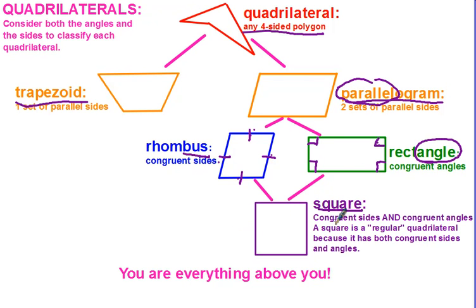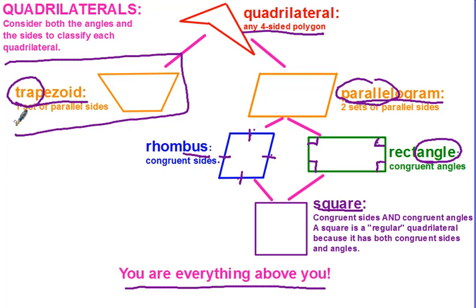And then square, of course, you've known since you were little. Another little trick is you are everything above you. Also for the trapezoid, if you decide that you have a trapezoid, you are trapped. You're over here all by yourself. You won't ever be any of these other things because rhombus, rectangle, and square have to be parallelograms.